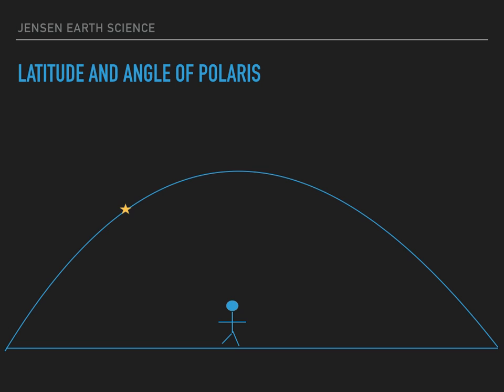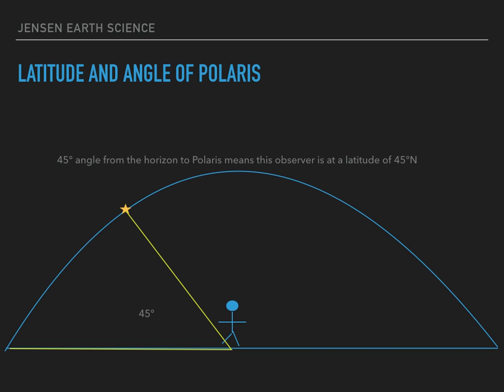If my Polaris is higher in the sky, at a higher angle from the horizon — something like a 45-degree angle, which is very close to New York — a 45-degree angle from the horizon to Polaris means this observer is at a latitude of 45 degrees North.